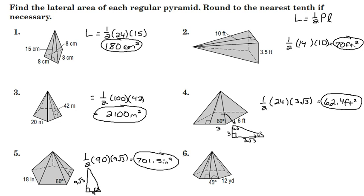Number 6, the last one, one half, perimeter, it's a hexagonal base, 12 times 6 is 72. We need our slant height.